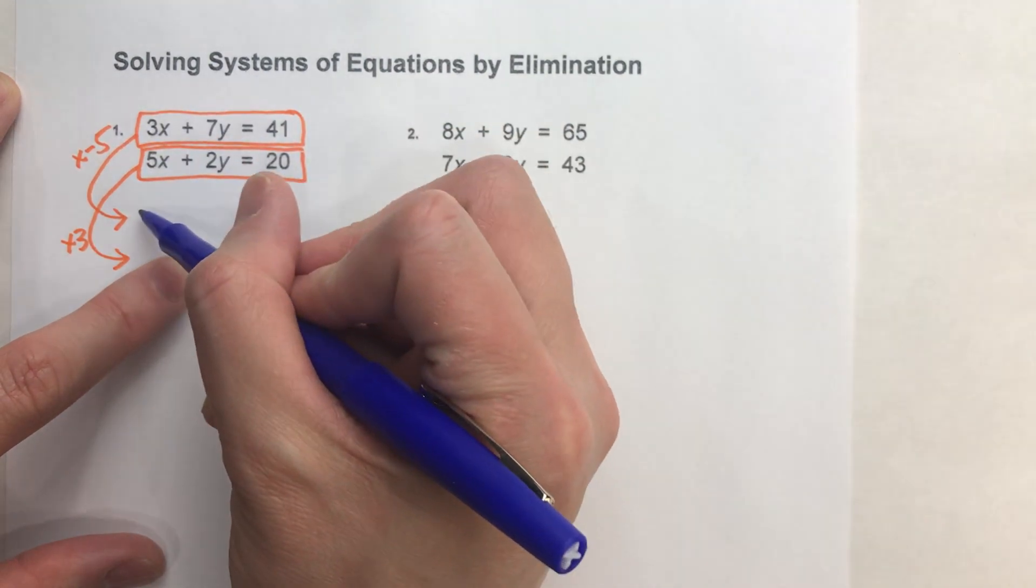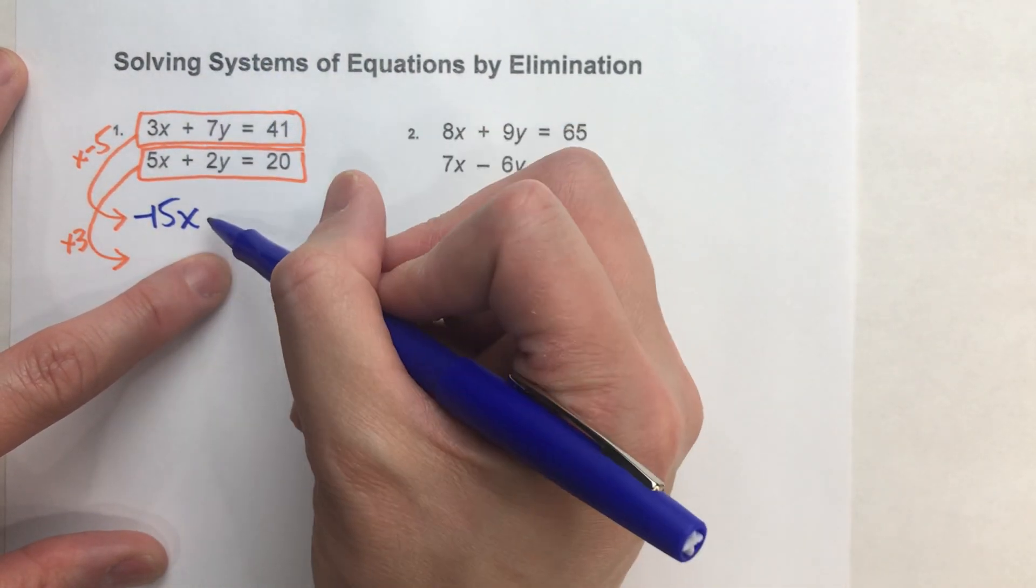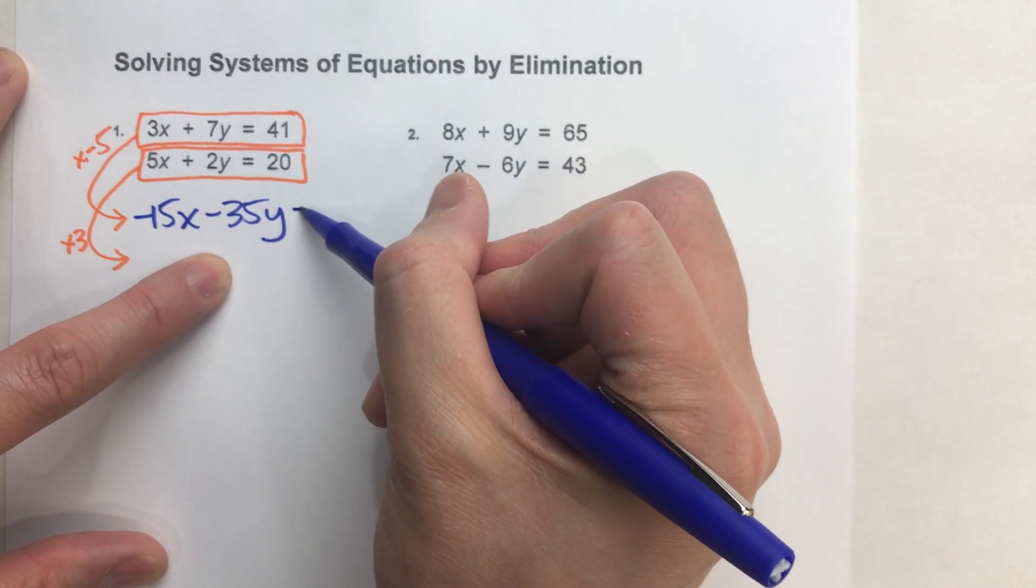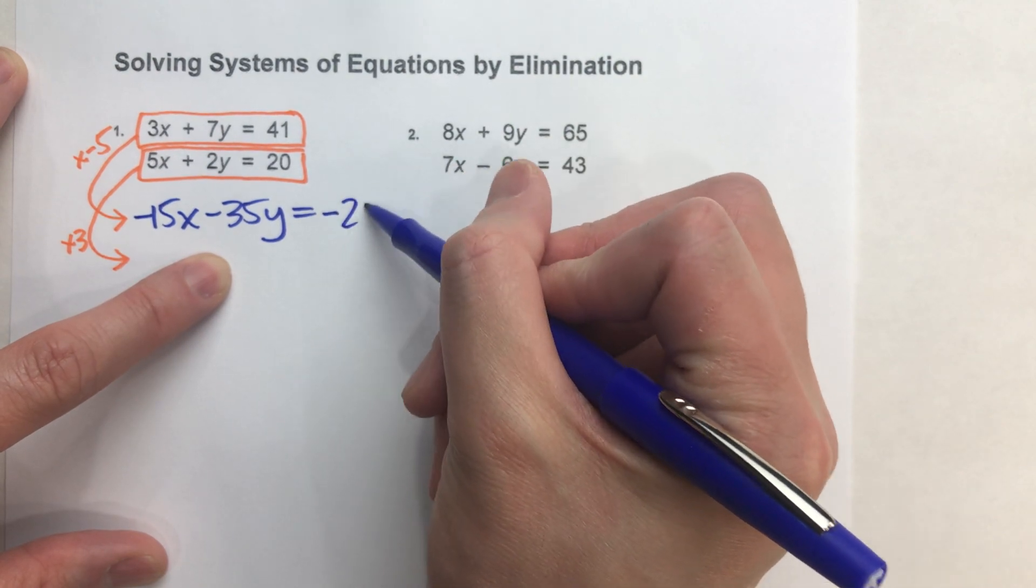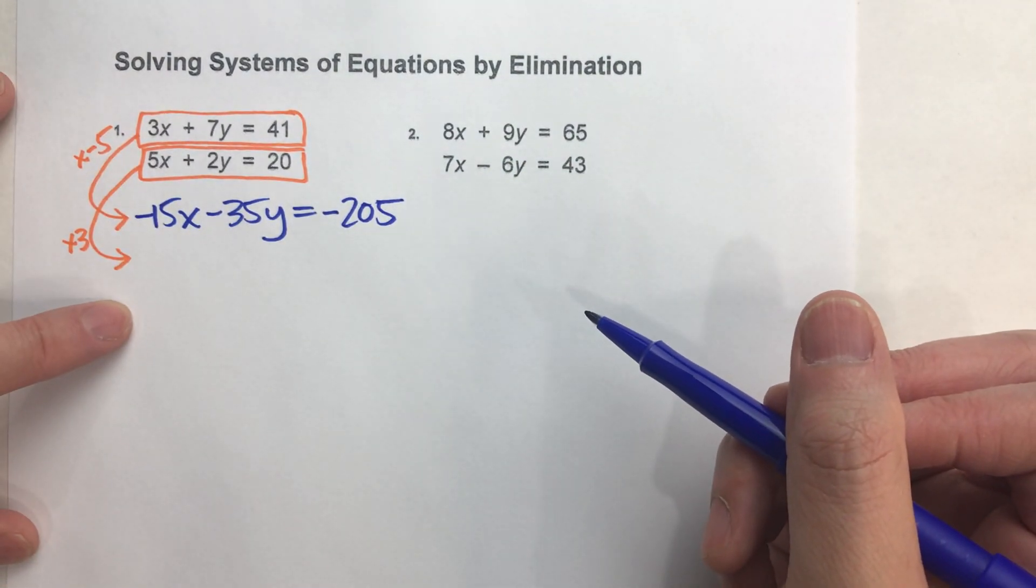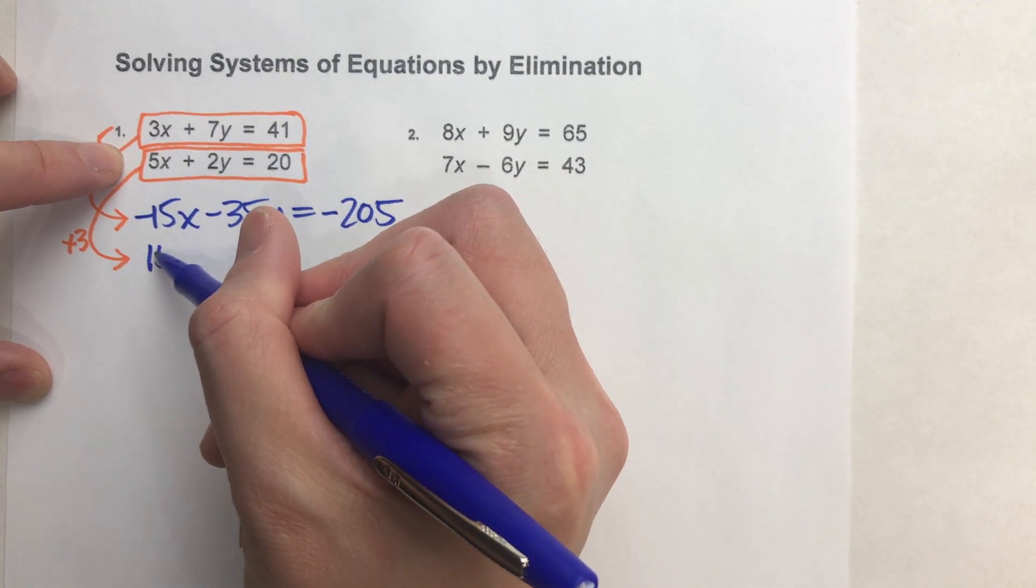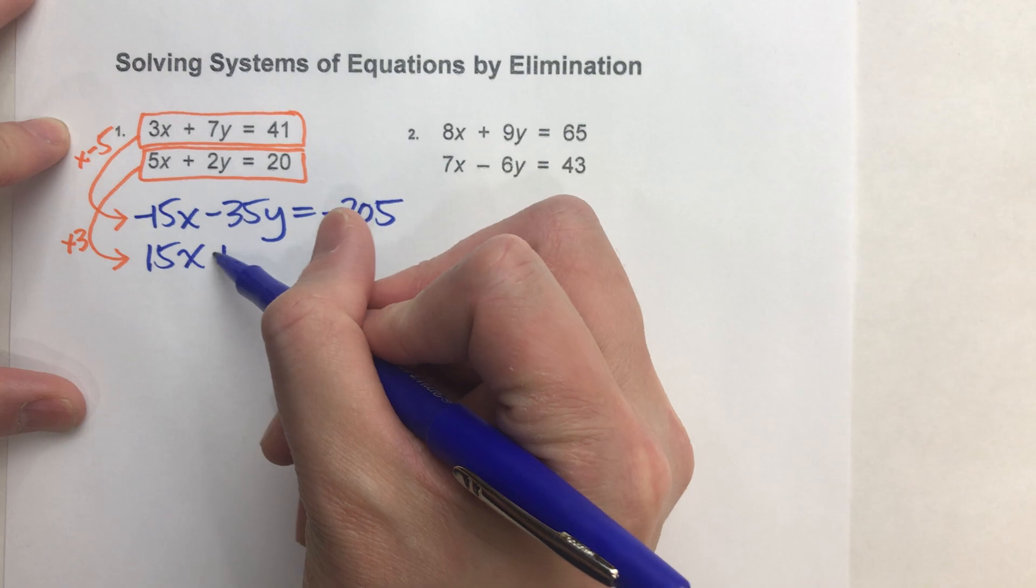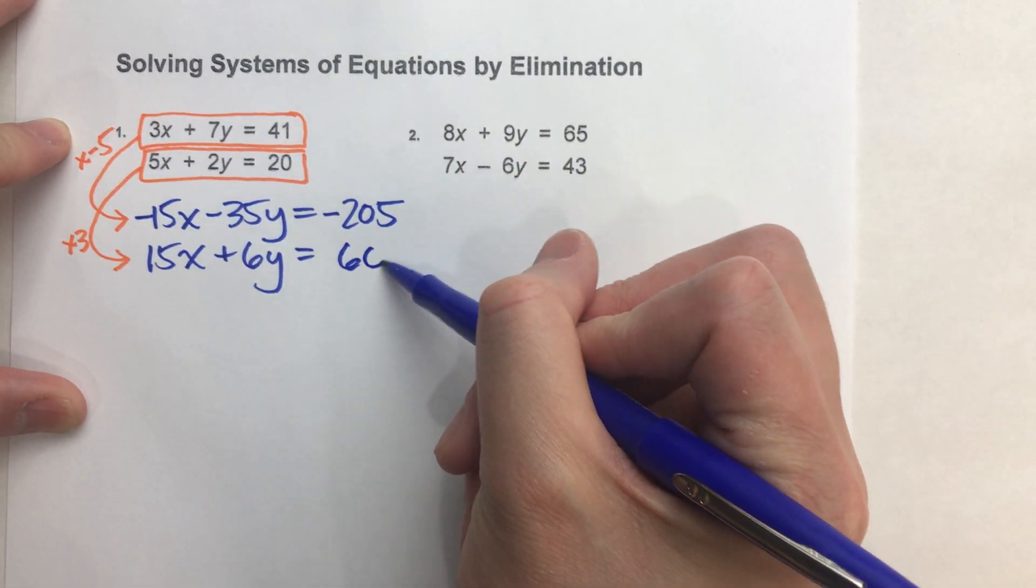Negative 5 times 3x is negative 15x. Negative 5 times 7y is negative 35y. And negative 5 times 41 is negative 205. On the bottom one, 3 times 5x is 15x. 2y times 3 is 6y. And 20 times 3 is 60.